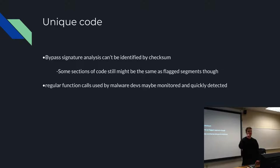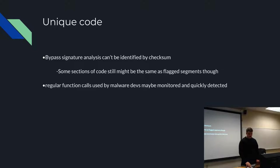A lot of AV uses a point system — if it sees enough points that it thinks are malicious, it'll flag and quarantine it. Specific function calls are sometimes flagged. Things doing network calls can be considered malicious, and exec calls are usually flagged as malicious too.